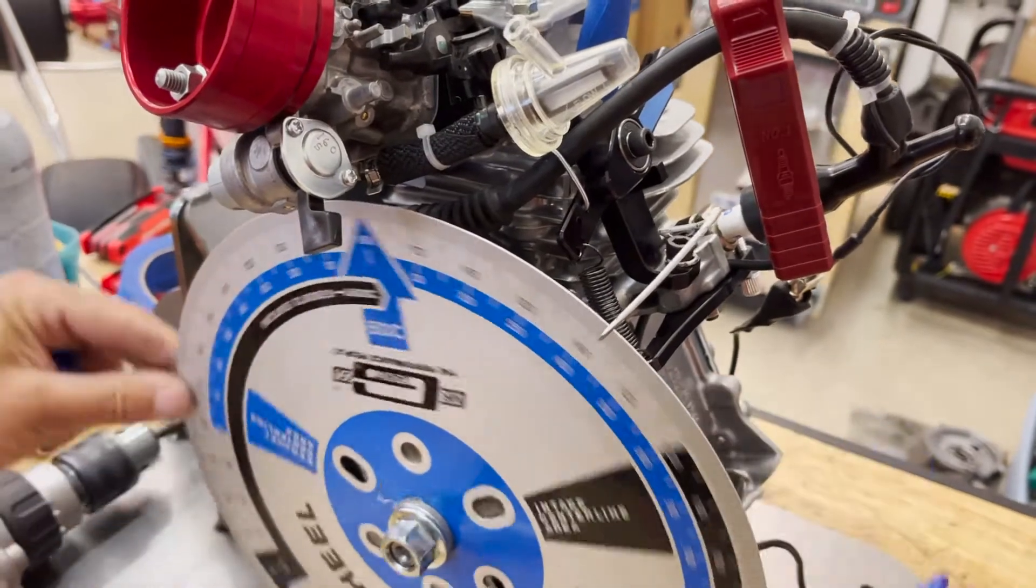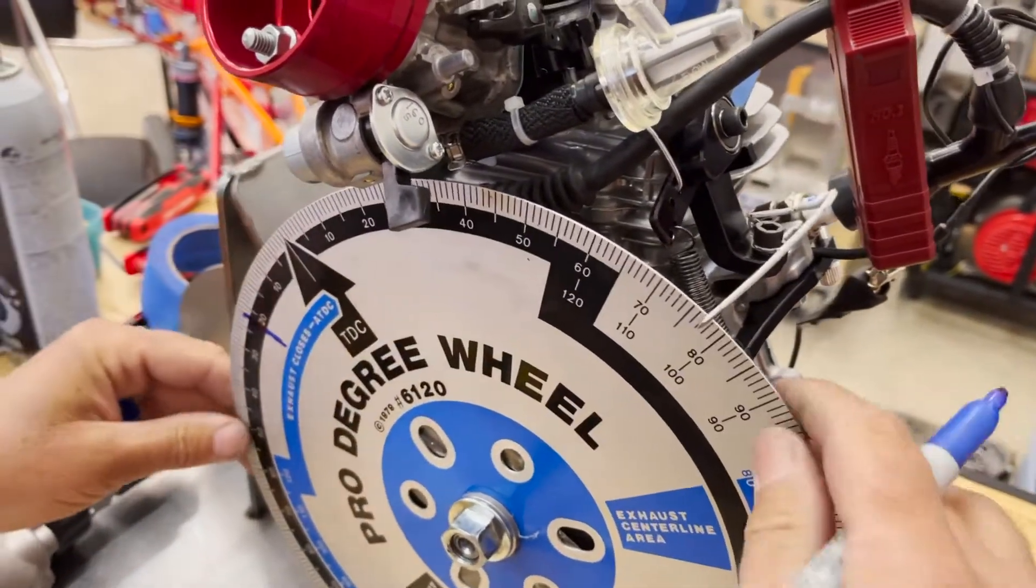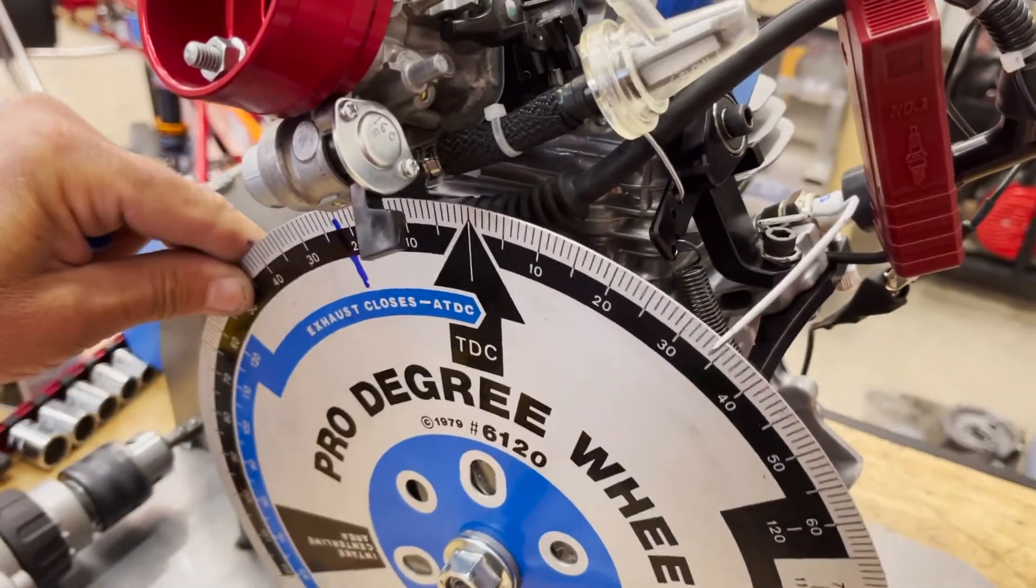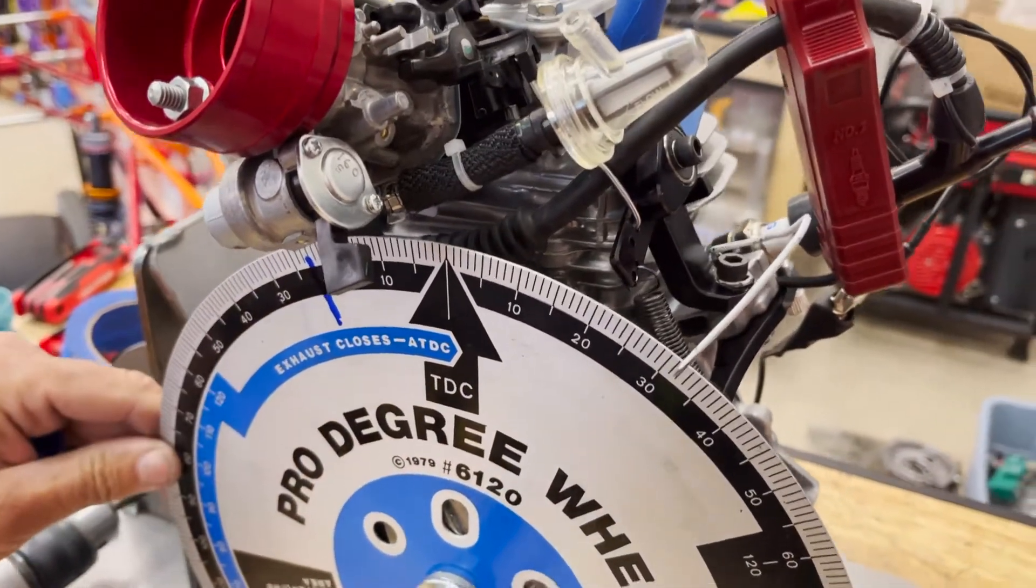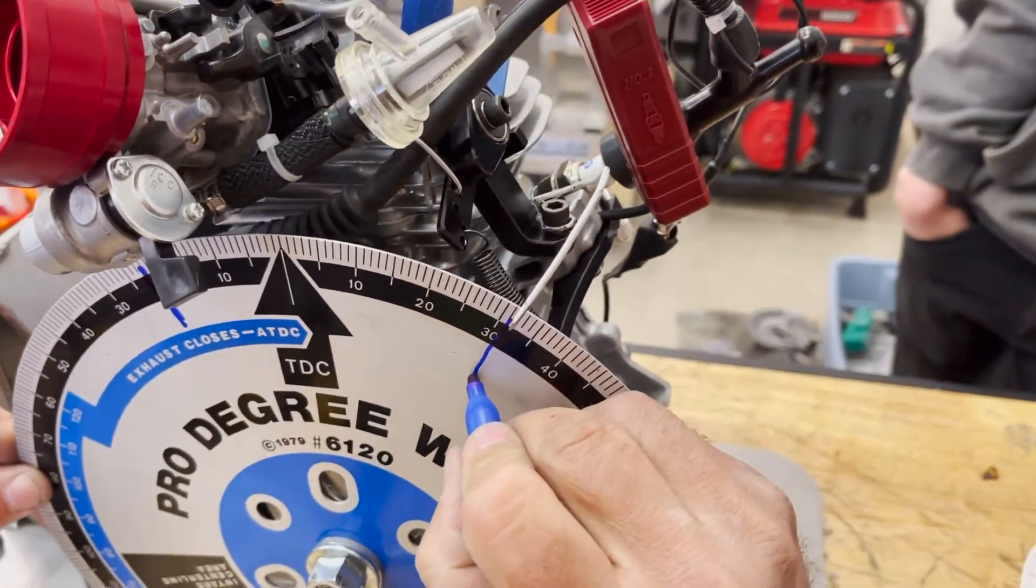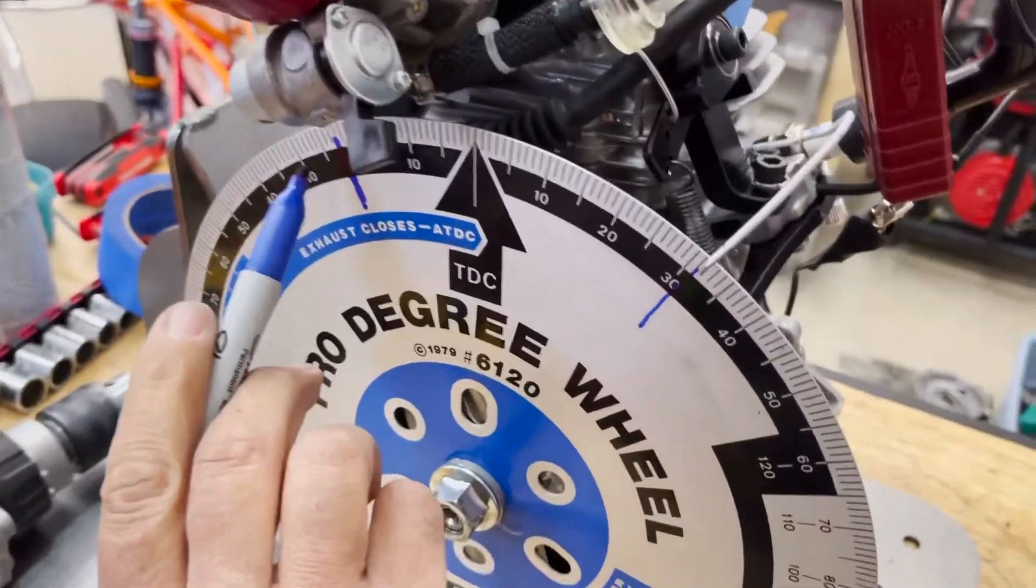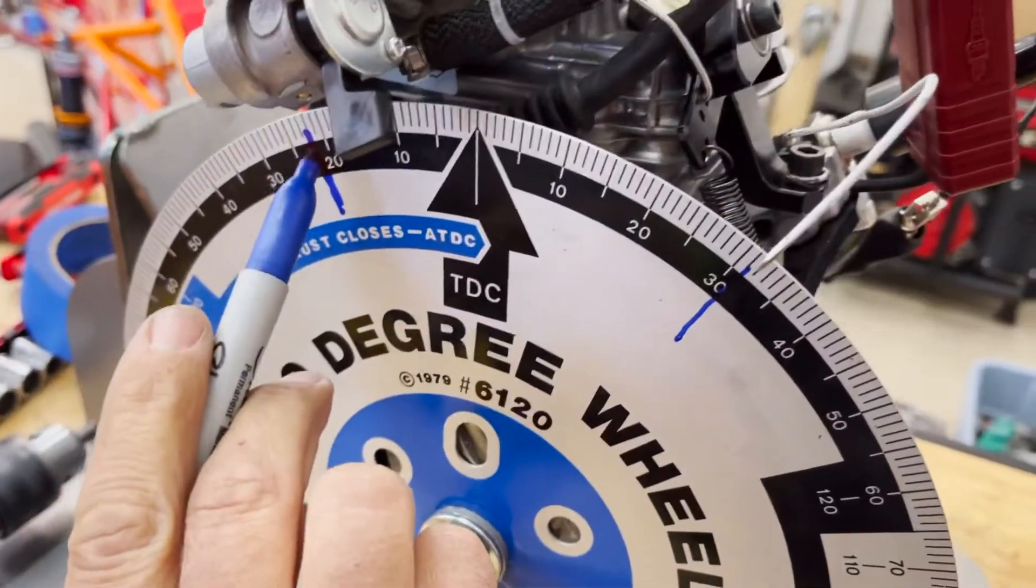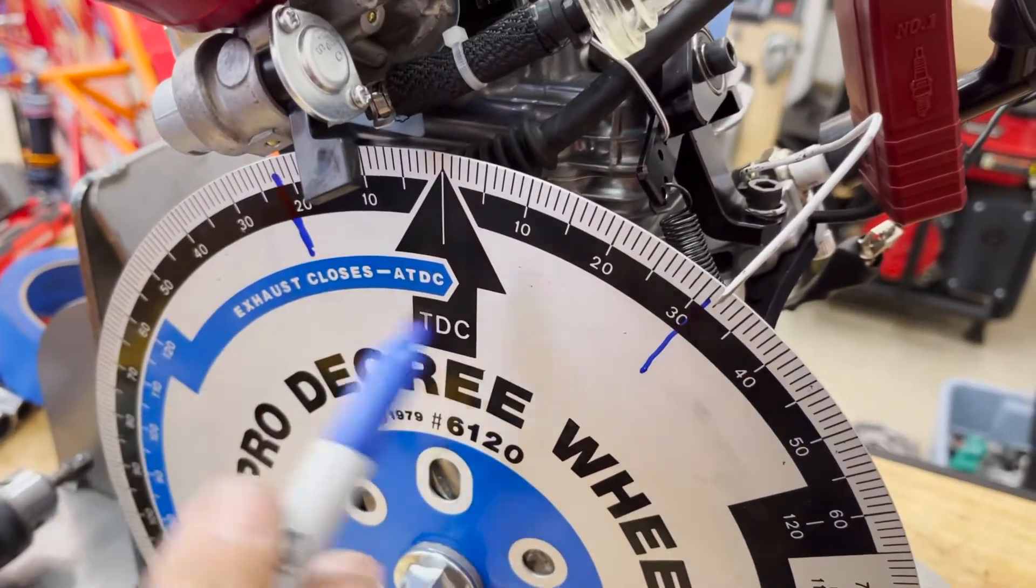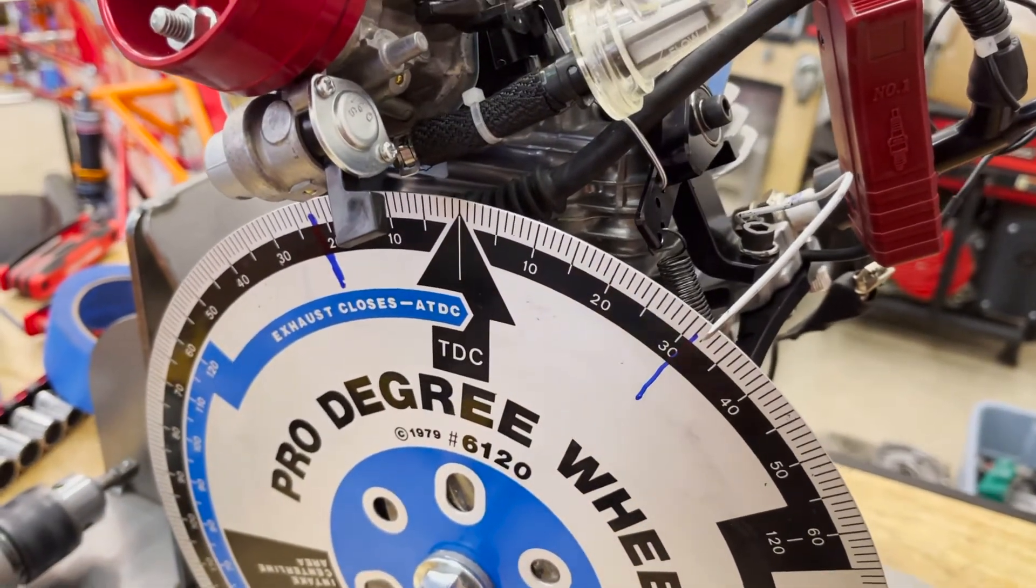Now we're going to turn it 180 degrees, and we're going to see where it stops. It's right at 31. Stops at 31. So, you want to be halfway between 22 and 31. You have to do a little math here.